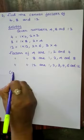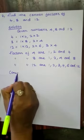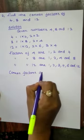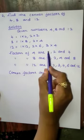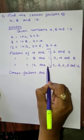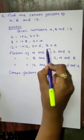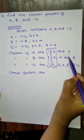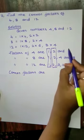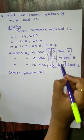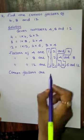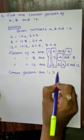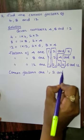Now we have to select the common factors. 1 is a common value, 2 is also a common value, and 4 is also a common value. So the common factors of 4, 8, and 12 are 1, 2, and 4.